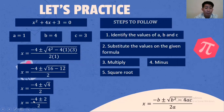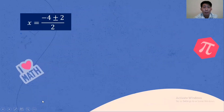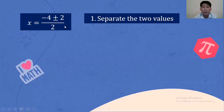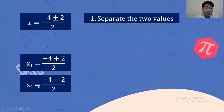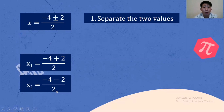So we have X equals negative 4 plus or minus 2 over 2. The next step is to separate the two values. Since we have plus or minus, X sub 1 is negative 4 plus 2 over 2, and X sub 2 is negative 4 minus 2 over 2. That's why we separate the two values.